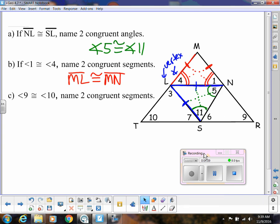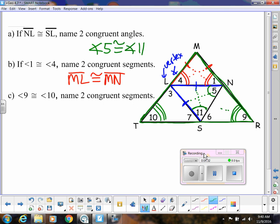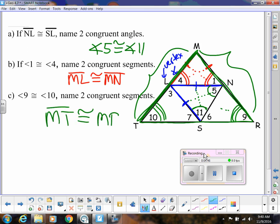And then for our last one, angle 9 is congruent to angle 10, name two congruent segments. So now we're looking at this whole big triangle as an isosceles triangle. So that means that across from angle 9 would be this whole big side, MT. So MT is congruent to MR. And that's just using the base angles theorem and its converse.